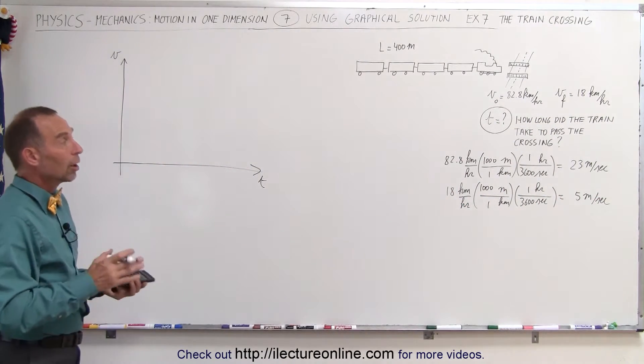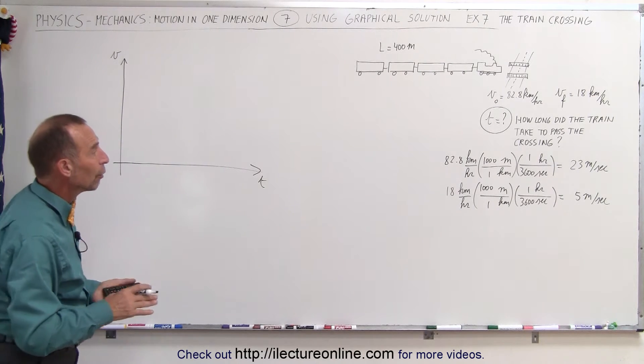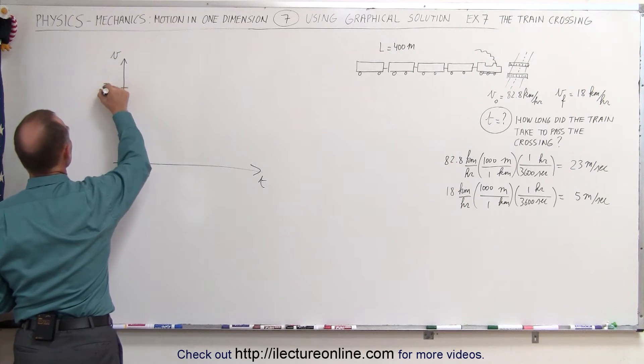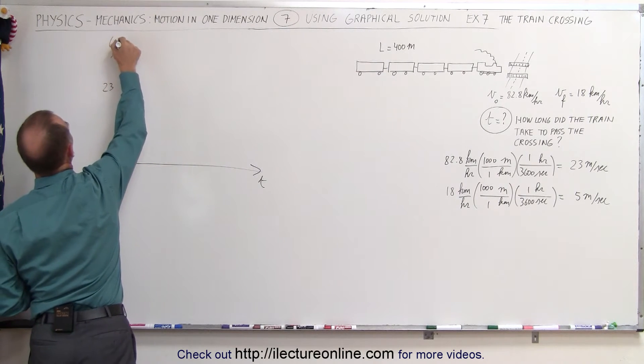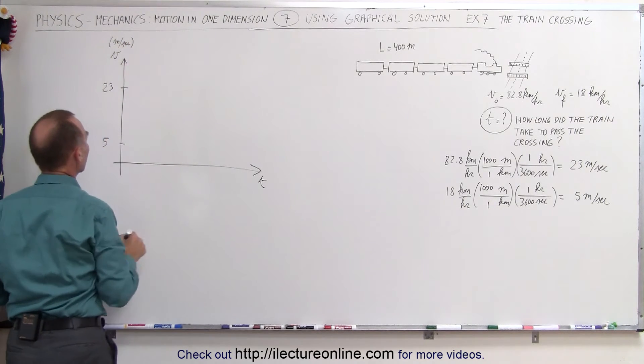Alright, so we don't know how long it takes, that's the question, but we do know that the train starts at 23 meters per second. The units here are meters per second, and slows down to 5 meters per second.